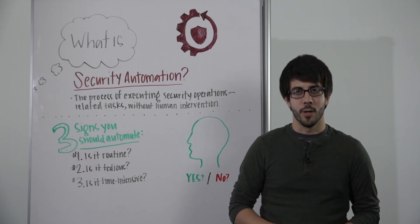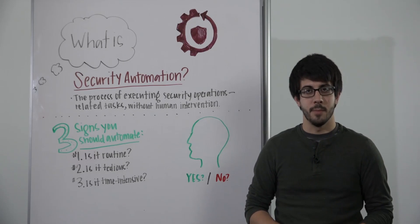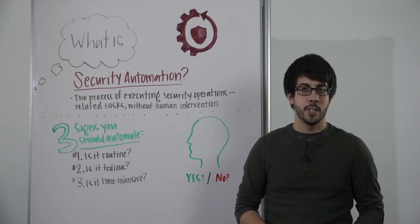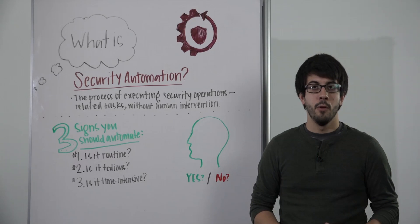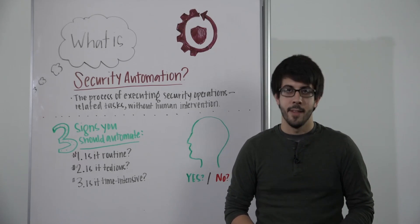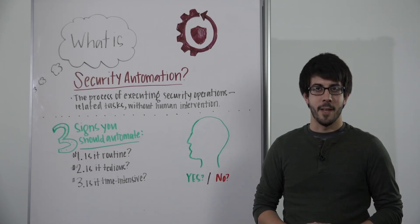Orchestration and automation can work together to empower security teams, offensive and defensive, and allow them to be more effective and focus on analysis and decision-making rather than manual, tedious, and time-intensive tasks. That's it for this week's Whiteboard Wednesday. We'll talk to you next time.